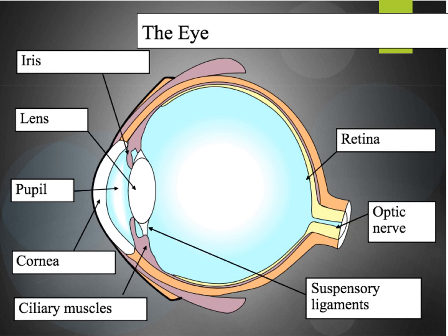By altering the size and shape of the lens, the eye can alter where the light is focused, depending on whether something is close by or much further away. At the back of the eye, we have the retina. The retina is made up of two different types of cells — both rod cells and cone cells. These two types of cells are able to detect colour, light, and black and white.